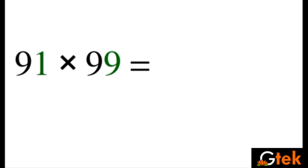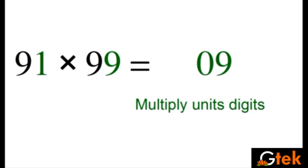91 into 99. My unit place is 9 and 1. So 9 into 1 is 9. So 09.